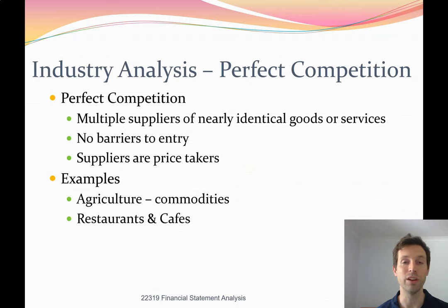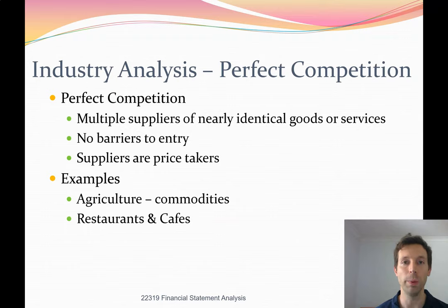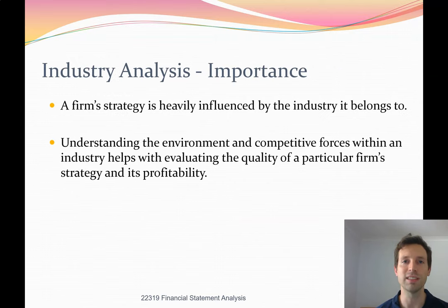Perfect competition is on the complete opposite side of the continuum from monopoly. It means multiple suppliers of nearly identical goods or services, with no or very minimal barriers to entry, and suppliers are therefore price takers — customers set the price and suppliers must accept it. Examples include the agricultural industry, where products are often commoditized and prices for goods like sugar, corn, and cocoa follow commodity price cycles. A farmer doesn't get to set the price of their corn; they sell onto a broad market where all corn is equal with no real differentiation. A firm's ability to generate value really depends on the amount of competition within the industry.